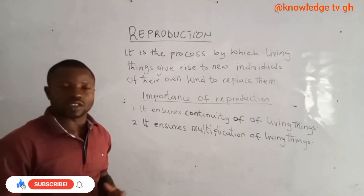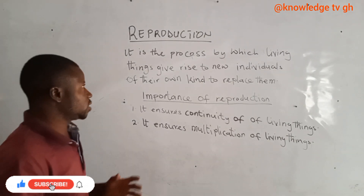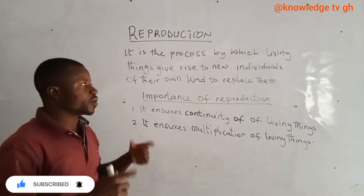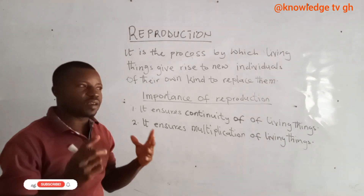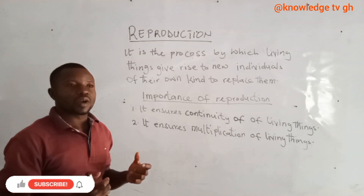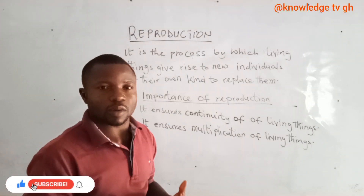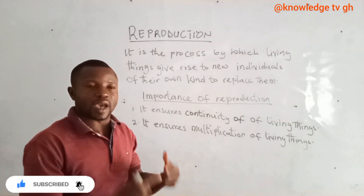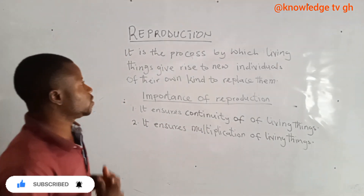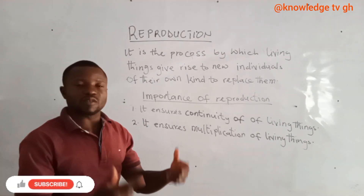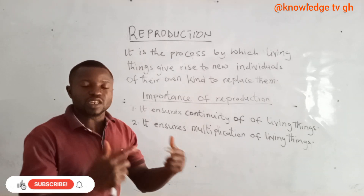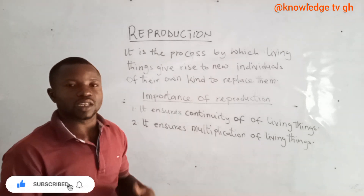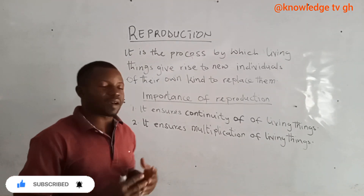Reproduction is the process by which living things give rise to new individuals of their own kind to replace them. So every living thing, if that living thing is normal, there must be another living thing that will replace it and perform the same function. When living things reproduce, they produce new individuals of their own kind that will replace them.